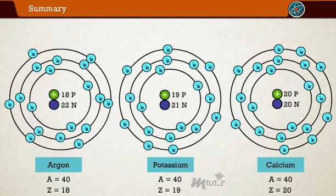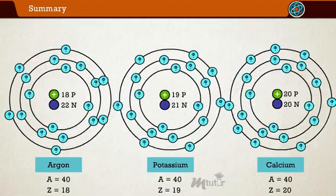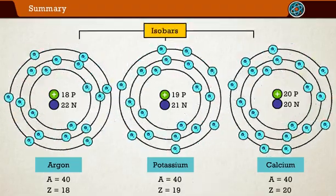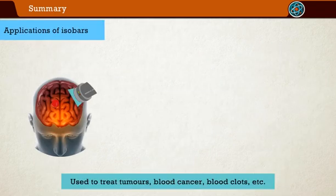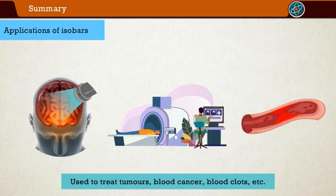Atoms of different elements with different atomic numbers which have the same mass number are known as isobars. Isobars are used to treat tumors, blood cancer, blood clots, etc.